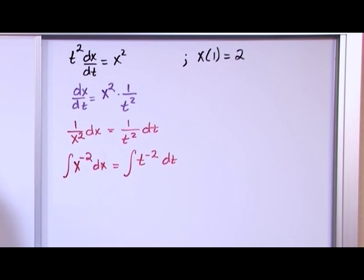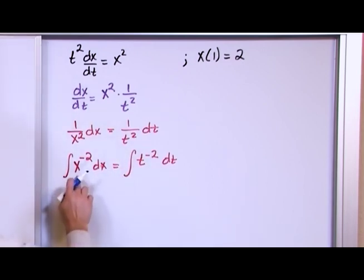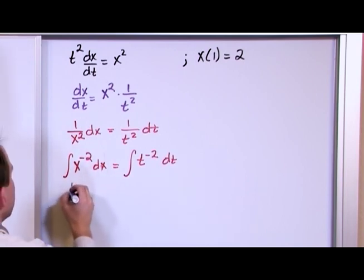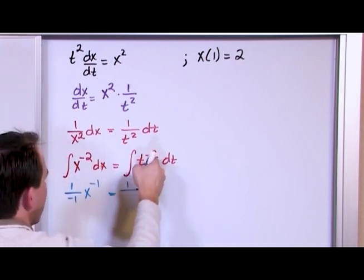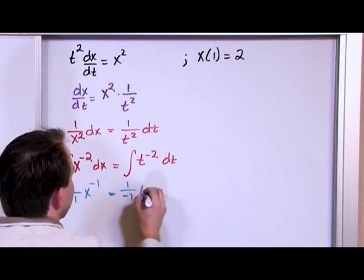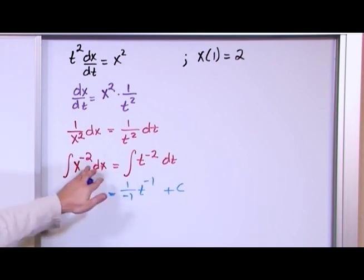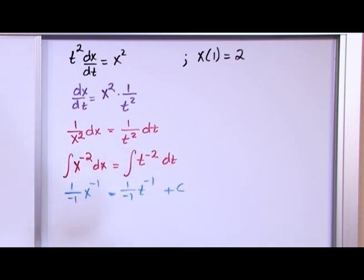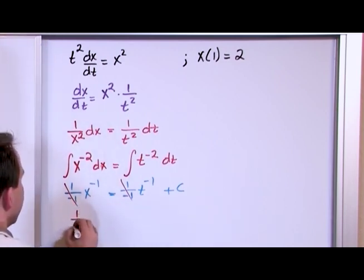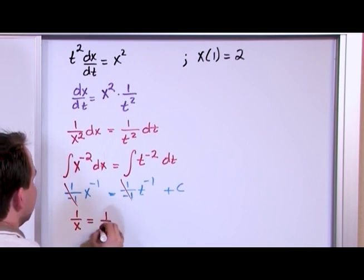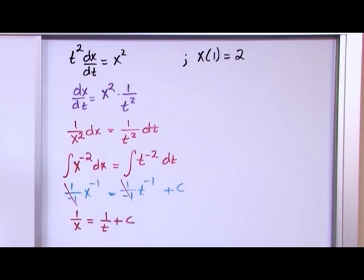Move dt over and move x² over: 1/x² dx equals 1/t² dt. Rewrite as x^(-2) dx equals t^(-2) dt and apply the integral to both sides. Integrating using the power rule — exponent becomes negative 1: the result is (-1) times x^(-1) on the left and (-1) times t^(-1) on the right. The two negative-ones cancel, giving 1/x = 1/t + C.